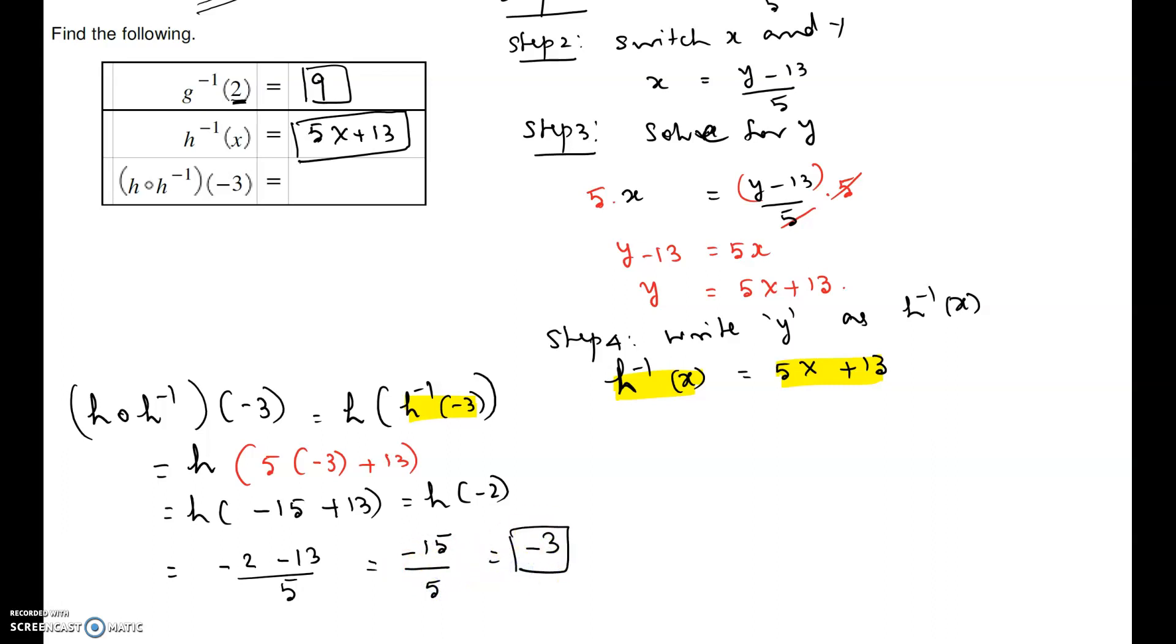So h composite h inverse at negative 3 is negative 3. Hope this video helps. With this one, we can expect a few. Thank you.